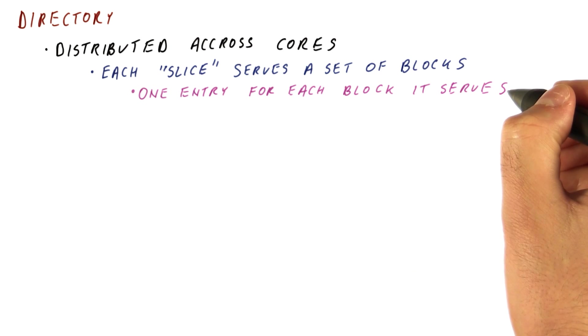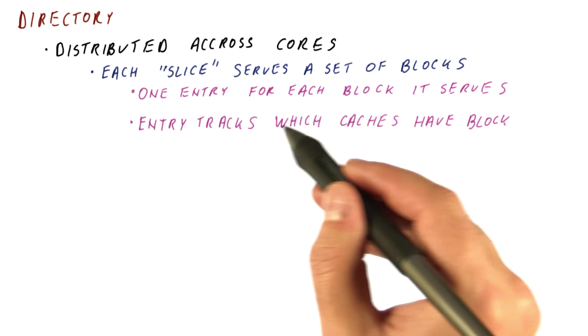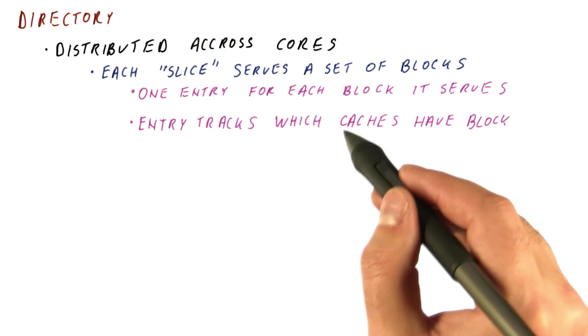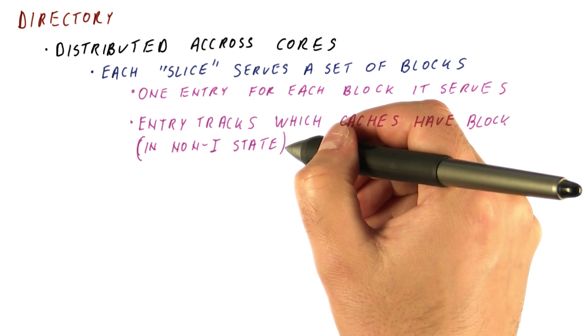What does a slice do? It has one entry for each block served by that slice, and the entry for a block tracks which caches in the system have this block in a non-invalid state, of course.